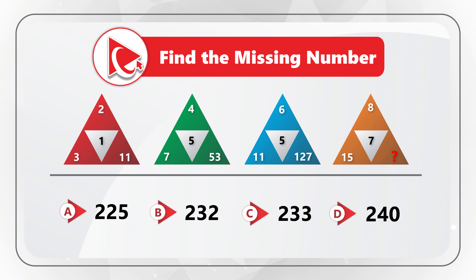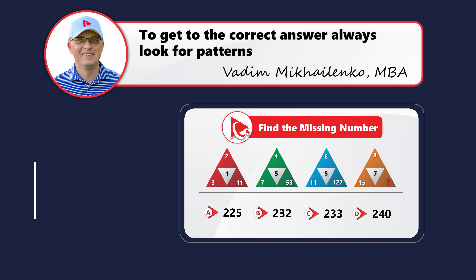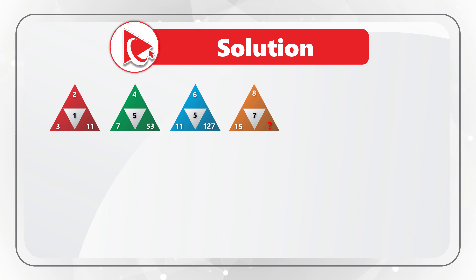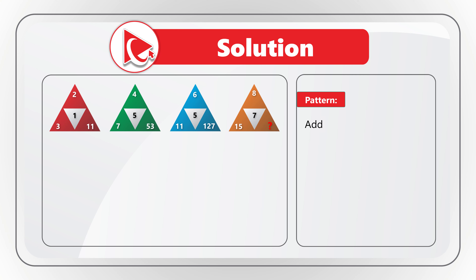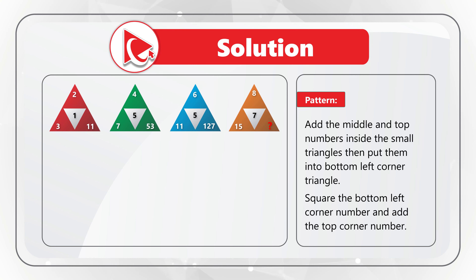Take a close look to see if you can solve this challenge. I am moving forward to share my version of the solution — if you have a better way to solve it, please post in comments. To solve this challenge you need to find the pattern: add the middle number and the top number inside the small triangles, put them into the bottom-left corner, then square that number and add the top number.